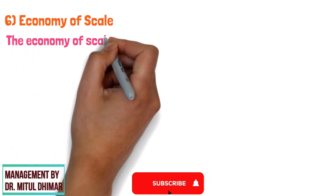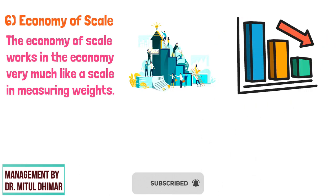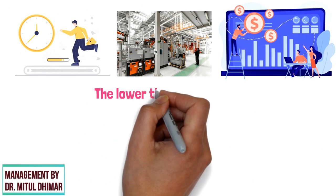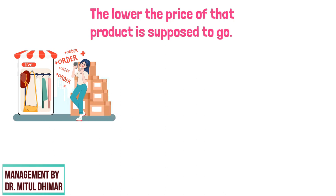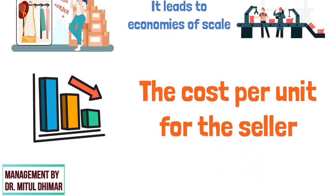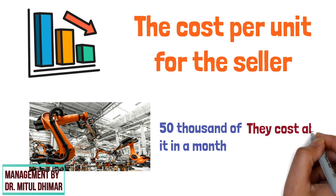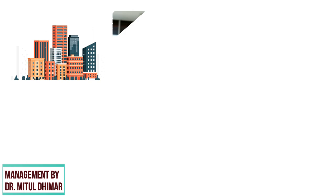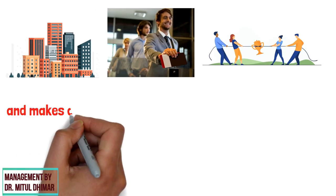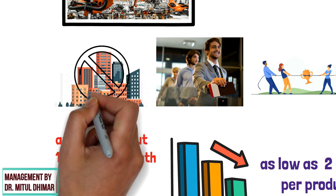Economy of Scale: the economy of scale works very much like a scale in measuring weights. It is believed that the larger an industry grows, the lower its products are supposed to cost. The more a firm manufactures its product in the fastest time possible, the lower the price of that product is supposed to go. Since there is a single seller in the market, it leads to economies of scale because of large-scale production, which lowers the cost per unit for the seller. For example, if a firm manufacturing Product X makes about $50,000 of it in a month at $5 each, other companies can enter the market and compete. But if this company improves efficiency and makes about $1,000,000 in a month, prices can drop to $2 per product, eliminating all competition.